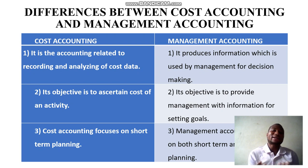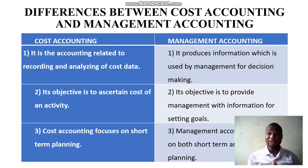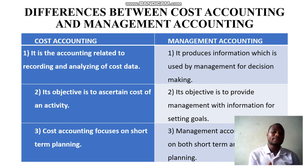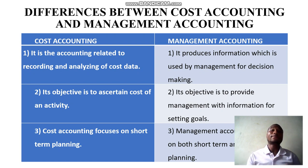Cost accounting, if you look at it critically, is all about short-term planning — planning within a year in an organization. But when it comes to management accounting, it deals with short-term, medium-term, and long-term planning. Medium-term refers to one to two years, and long-term refers to over five years.